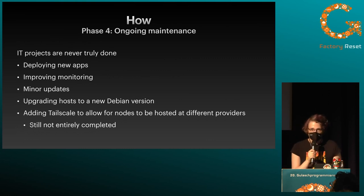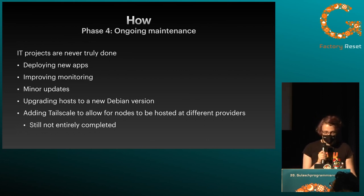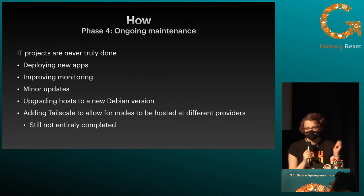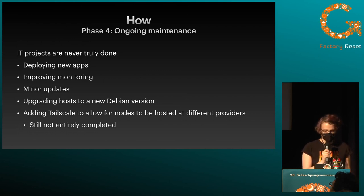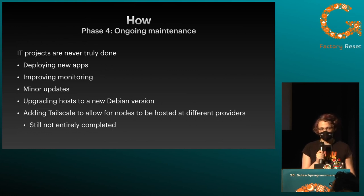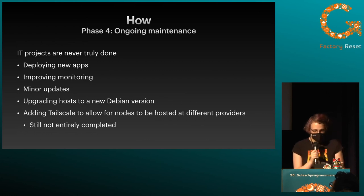Phase four: ongoing maintenance, because IT projects are just never truly done. First of all, deploying new apps — whatever stuff I wanted to throw in there. Improving monitoring, installing minor updates, upgrading to a new Debian version — when I started it was still Debian 10, now we're on 11. I also added Tailscale, which is like VPN but much cooler and less config. I added that so I could also add nodes at different providers, because at this point all my container nodes were at the same server provider with a VLAN between them. With Tailscale, hopefully I can have nodes hosted at different providers so when one provider goes down, my infrastructure does not go down with it — that's not entirely completed yet.